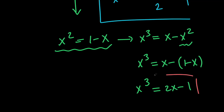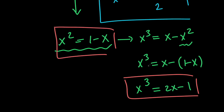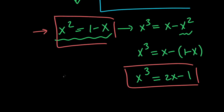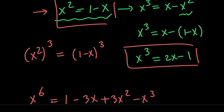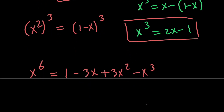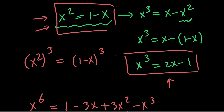Let's use these equations to find x to the power of 7 in terms of x to the power of 1. To do that, let's cube both sides of the equation x squared equals 1 minus x to get x squared all to the power of 3 equals the quantity 1 minus x to the power of 3, which means that x to the power of 6 equals 1 minus 3x plus 3x squared minus x cubed. We need to replace x squared with 1 minus x and x cubed with 2x minus 1.